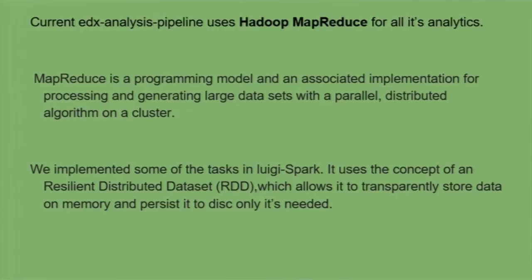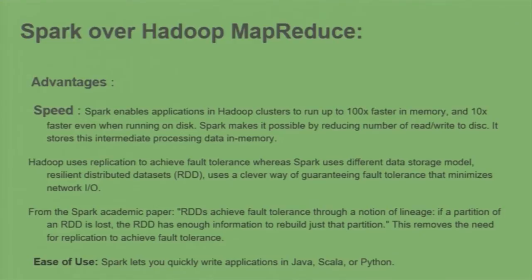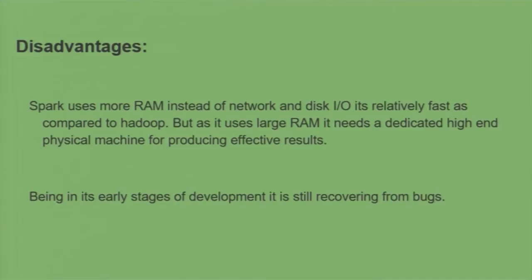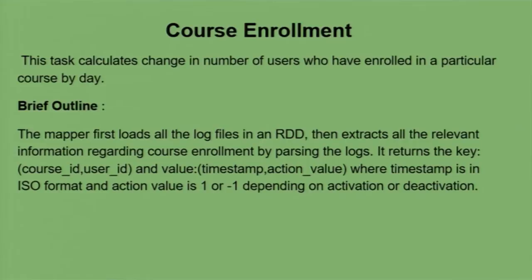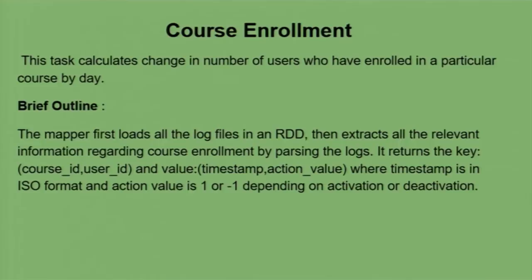The task assigned to us was to convert Hadoop MapReduce tasks to Apache Spark. This was because the current edX pipeline uses Hadoop MapReduce, which is lower in time efficiency compared to Apache Spark. Spark uses RDDs which store data transparently in RAM rather than writing to disk, saving cost from rewrite operations. A major benchmark is that Spark runs at least 100 times faster than Hadoop MapReduce. The only disadvantage is that it uses more RAM, and being in early stages of development it is still recovering from bugs. We successfully converted two edX pipeline tasks into Spark tasks.